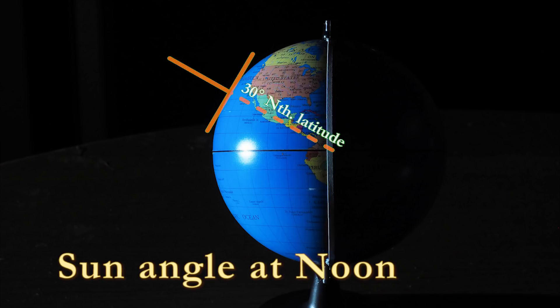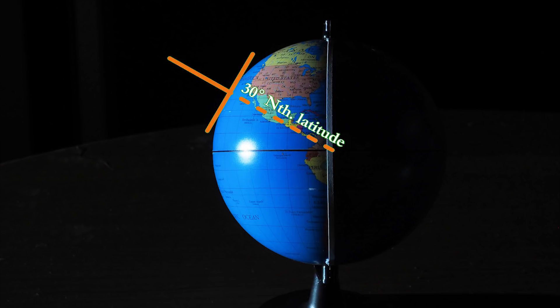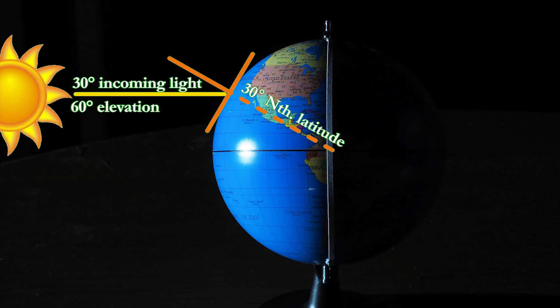Let's pick a latitude of 30 degrees north and draw a line to represent a vertical object on the surface of the Earth. At solar noon, the sun's rays are coming in at an angle of 30 degrees to the surface.